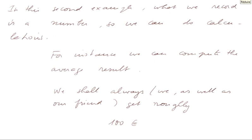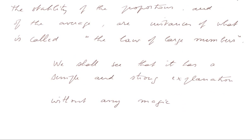In this second example, what we record is a number, so we can do calculations. For instance, we can compute the average result. We shall always, we as well as our friend, get roughly 100 euros. The stability of the proportions and of the average are instances of something that's called the law of large numbers. We shall see that it has a simple and strong explanation, without any magic.